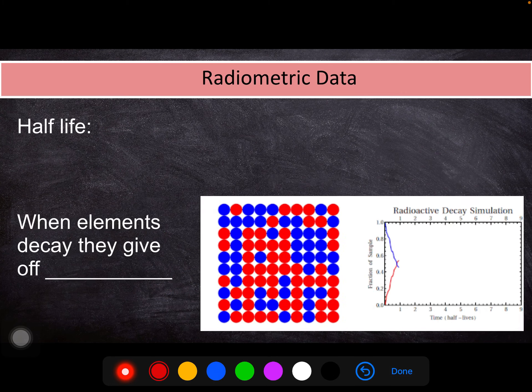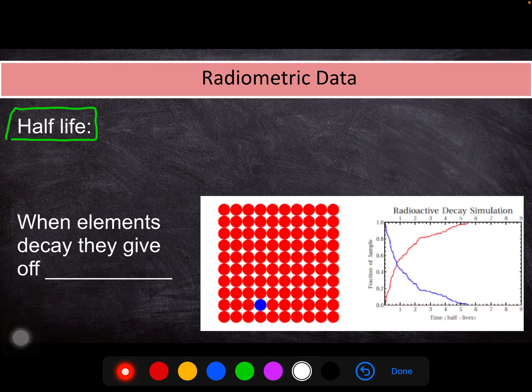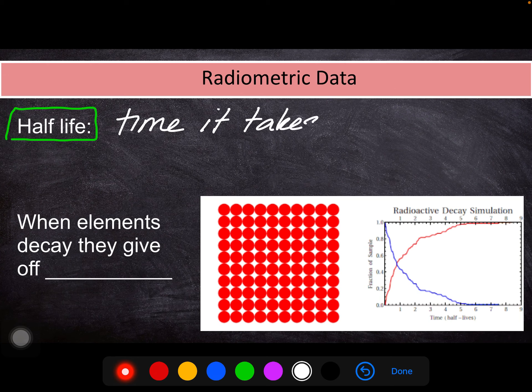And that flip-flop is what can tell us how old the rock is. And to do that, we use this term called half-life. Half-life is the time that it takes. So half-life is a measure of time. It can be hours, it can be minutes, it can be seconds, depending on what the element is.